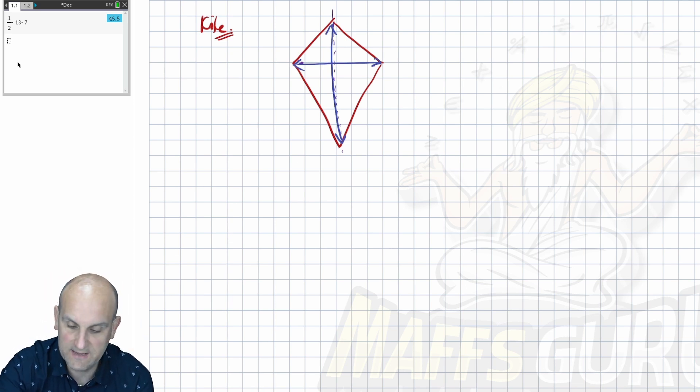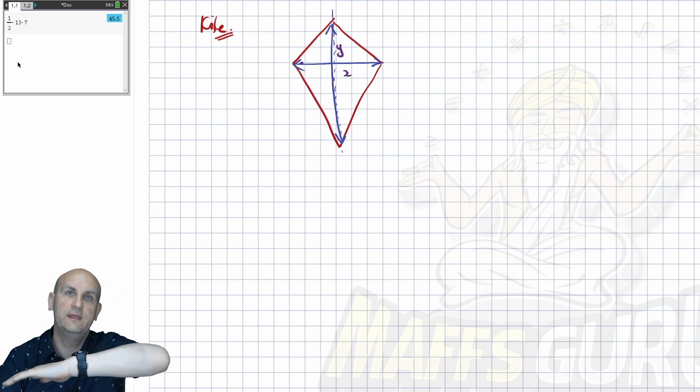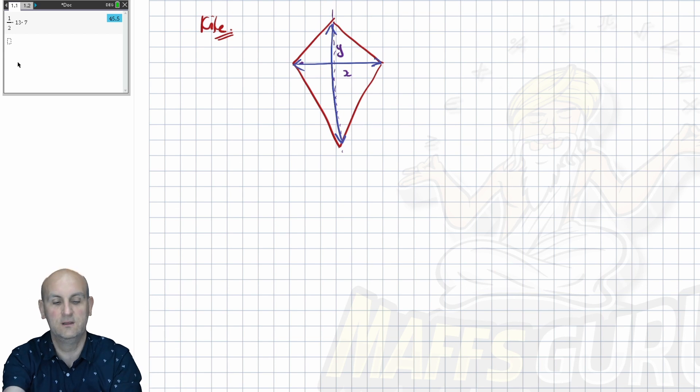And again, because maths is maths, we call one of them x and we call the other one y. Now, if you've done coordinates, which you probably have, the x values are, that's an x length and that's a y length, because x is the horizontal, y is the vertical.